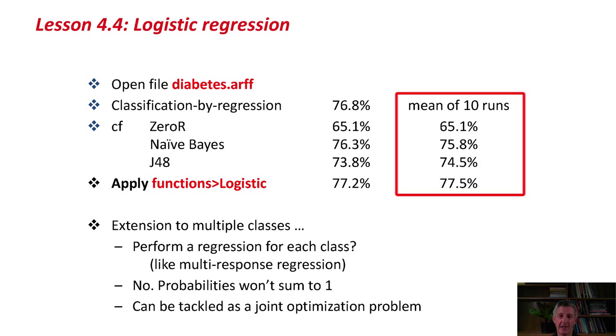You can extend the idea to multiple classes. I mean, when we did this in the previous lesson, we performed a regression for each class, a multi-response regression. But that actually doesn't work well with logistic regression because you need the probabilities to sum to one over the various different classes. That introduces more computational complexity and needs to be tackled as a joint optimization problem.